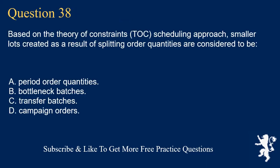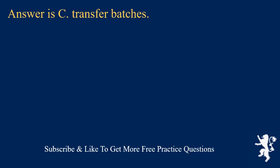Question 38. Based on the theory of constraints (ToC) scheduling approach, smaller lots created as a result of splitting order quantities are considered to be: A. Period order quantities. B. Bottleneck batches. C. Transfer batches. D. Campaign orders. Answer is C. Transfer batches.